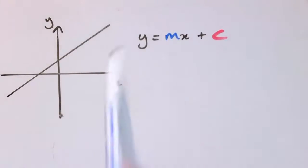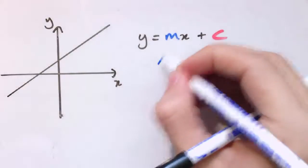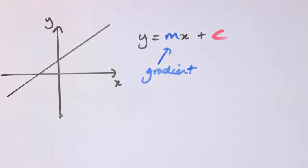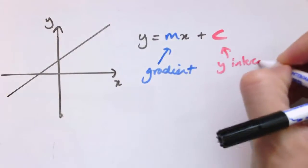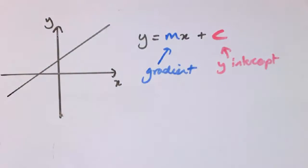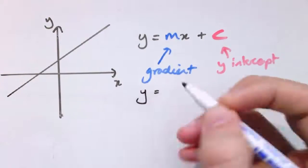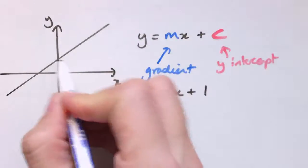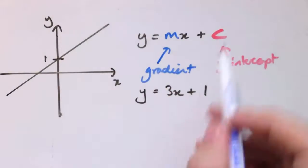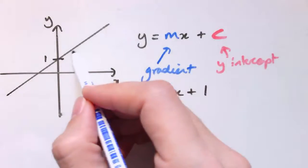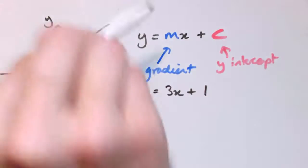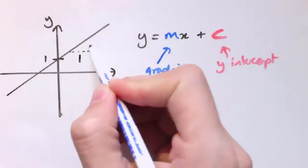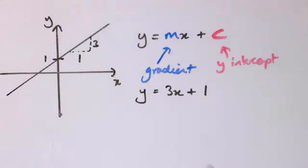You're probably familiar with the form y equals mx plus c, where m is the gradient of the line — that tells us how steep the line is — and c is the y-intercept, which is just where the line crosses the y-axis. So for example, if I had y equals 3x plus 1, this line would go through 1 on the y-axis and have gradient 3, so as x goes up 1, y would go up 3.